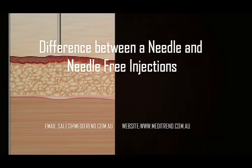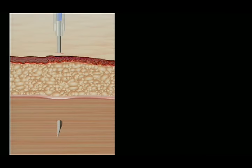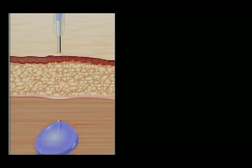As the plunger on a traditional needle and syringe is depressed, a spherical pool of medication called a bolus forms at the tip of the needle.